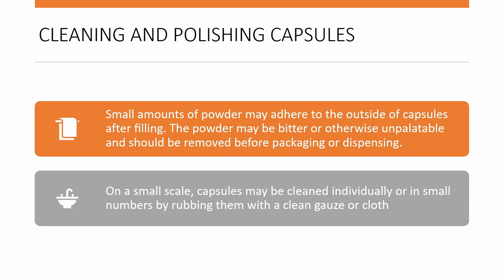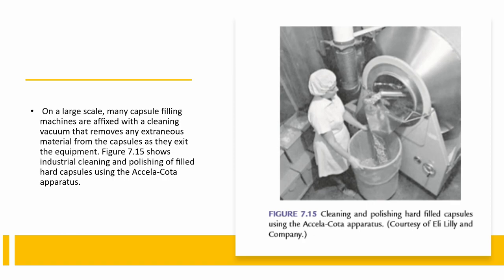After making and sealing the capsules, you need to clean and polish them. A good capsule is clean and shiny, showing the professionalism of the pharmacist. Additionally, powders stuck to the outside of the gelatin will add a bitter taste when the patient takes them. On a small scale, capsules may be cleaned individually by rubbing them with a clean gauze or cloth. On a large scale, machines are used — capsules are placed in a rotating chamber with a vacuum that removes any extraneous materials as they exit the equipment.